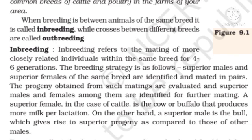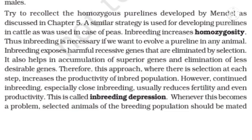When breeding is between animals of the same breed, it is called inbreeding, while crosses between different breeds are called outbreeding. Inbreeding refers to the mating of more closely related species or individuals within the same breed for four to six generations. Superior males and superior females of the same breed are identified and mated in pairs. The progeny obtained from such matings are evaluated and superior males and females among them are identified for further mating. A superior female in the case of cattle is the cow or buffalo that produces more milk per lactation, while a superior male is the bull which gives rise to superior progeny.